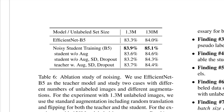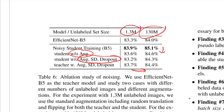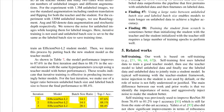The ablation results show that the extra unlabeled dataset improves all situations. Without data augmentation on the student, accuracy drops immediately. Without augmentation and without model noise, performance drops again. When the teacher is noised during pseudo-label generation, performance also drops significantly. All of these components contribute, and they do many more ablation experiments.